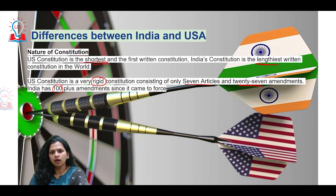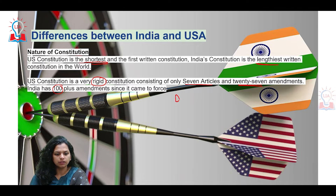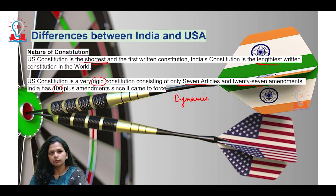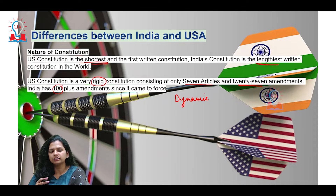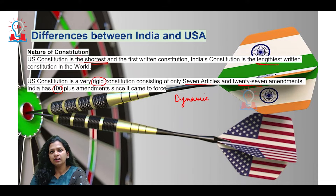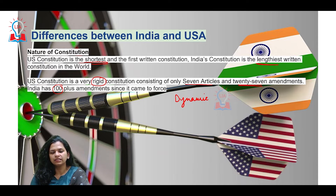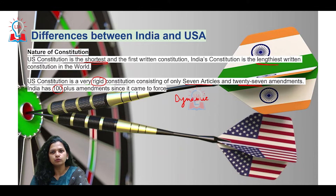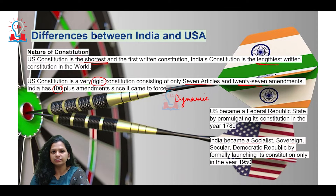India has tried to make its constitution much more dynamic, which makes it relevant and helps it stand the test of time — which is why the provision for amendments was incorporated. Successfully, 100-plus amendments have been made so far, showing both that it's possible and that the constitution has withstood the test of time by evolving and adapting to the changing scenario.